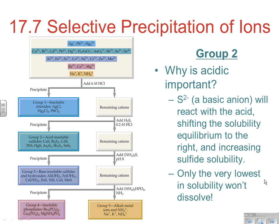Why is the acidic condition so important here? S²⁻ is a basic anion — it will react with H⁺, shifting the solubility equilibrium to the right, which increases the sulfide solubility. Only things with very, very low solubilities will precipitate out and not stay dissolved. So adding our acid is basically shifting the solubility so that only things with very low sulfide solubility will precipitate. Other substances that would precipitate without the acidic environment are pushed by the equilibrium far enough that most things — unless they have a very low solubility — are going to stay dissolved.